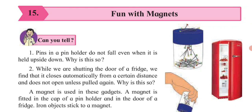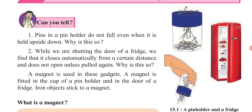While shutting the door of the fridge, we find that it closes automatically from a certain distance and does not open unless we pull it again. When you take the door near to the refrigerator, both doors get closed. This is happening because of magnets fitted inside these gadgets — a magnet is fitted in the cap of the pin holder and in the door of the fridge, and iron objects stick to the magnet.